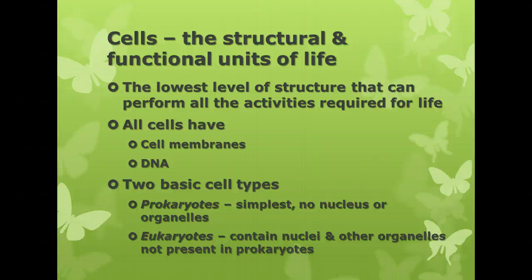There are some things that all cells have in common: all cells have cell membranes and all cells have DNA. There are other things that some cells have and others don't, like cell walls. We can break all cells into two main kinds: prokaryotes and eukaryotes. Prokaryotes are the simplest kinds of cells — bacteria, for instance. They have no nucleus, no organelles, though they do have DNA; the DNA is just not enclosed in a nucleus.